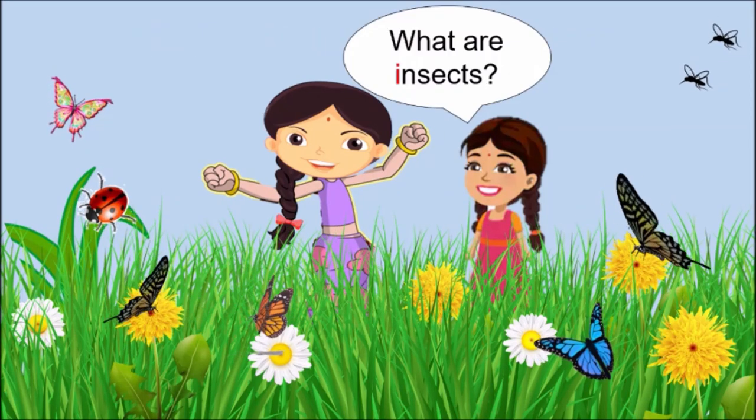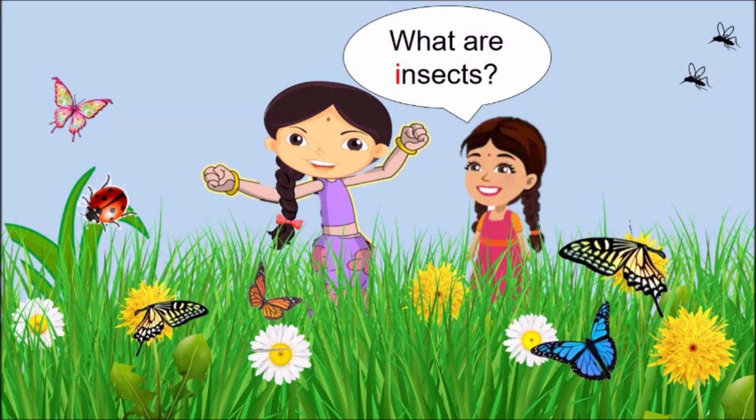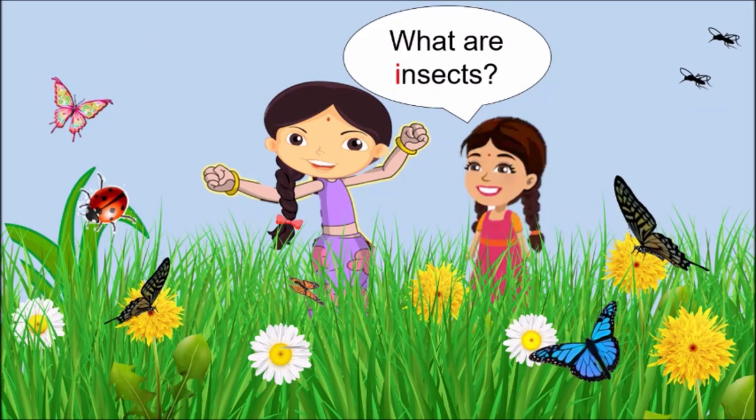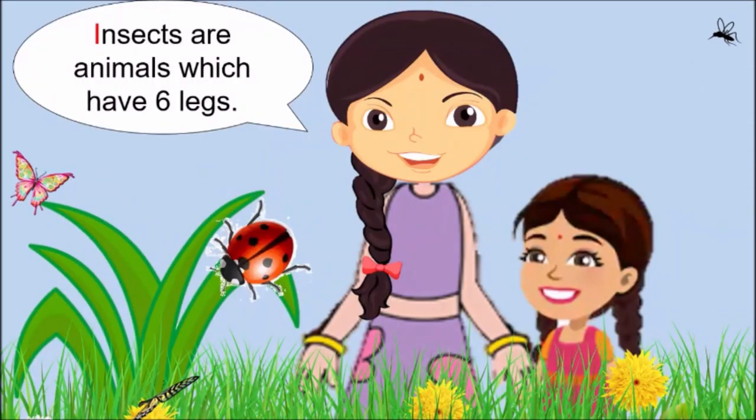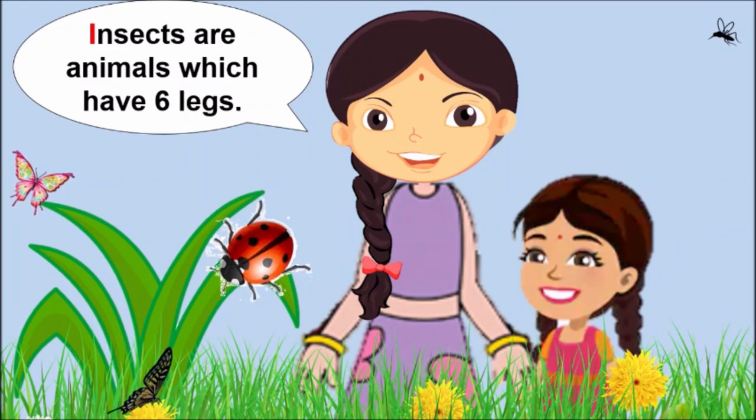Her sister asked, Didi what are insects? Isha replied, insects are animals which have six legs. Do you see this ladybug? This ladybug is an insect. It has six legs.